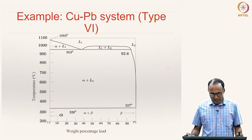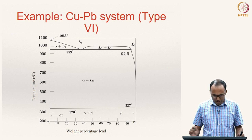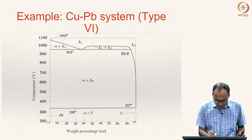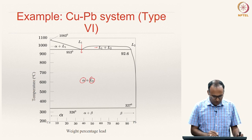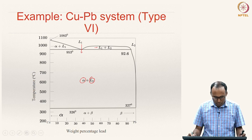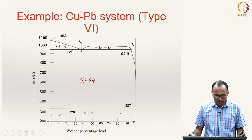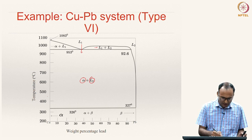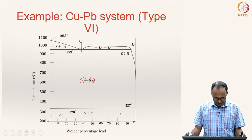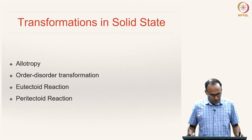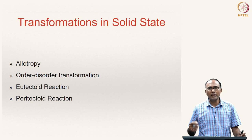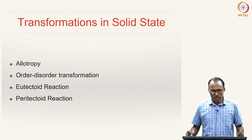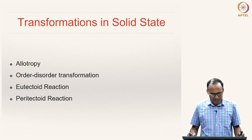A real-world example of a system showing the monotectic reaction is the copper-lead system, where you can clearly see the two liquid solutions. The monotectic reaction is L₁ → alpha plus L₂. The weight fraction of lead in copper is very very small, so the solid solution line is not clearly shown, but it is not pure solid copper—it is a solid solution of copper and lead. So far we have looked at transformations involving a liquid phase; the next type of transformation we will discuss in the next class involves transformations in the solid state. Thank you very much.